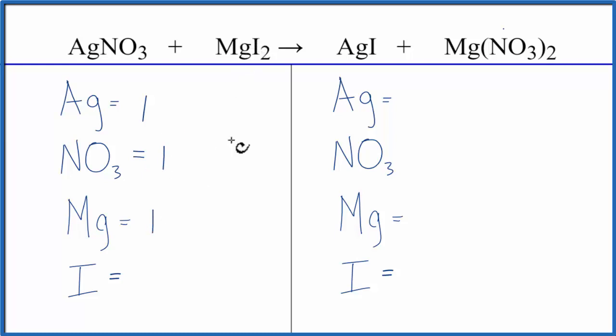We have one magnesium, and then we have two iodine atoms. On the product side, we have one silver, two of these nitrates, these NO3s, one magnesium, and then we have one iodine.